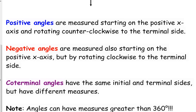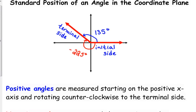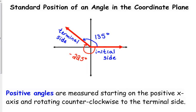Now we could have also gone around more than once. Angles can have measures greater than 360 degrees. So if I start here on the initial side and go past my terminal side, all the way around — that's 360 degrees — and then go an additional 135 and stop, that's the exact same angle. But in this case it would be labeled as 495 degrees. We just went around an extra time. So I added 360 degrees to that 135.